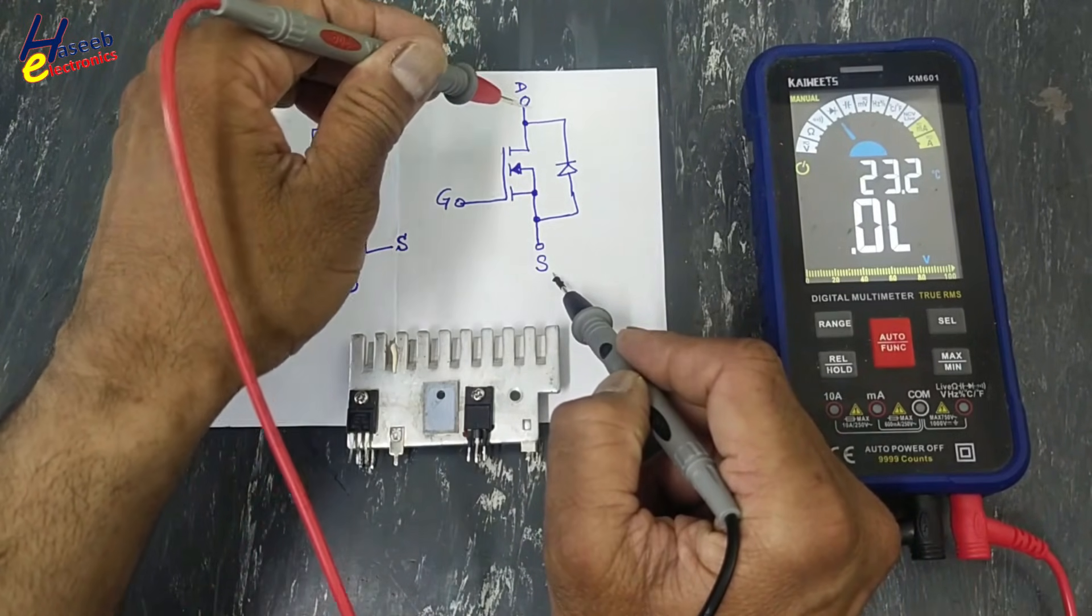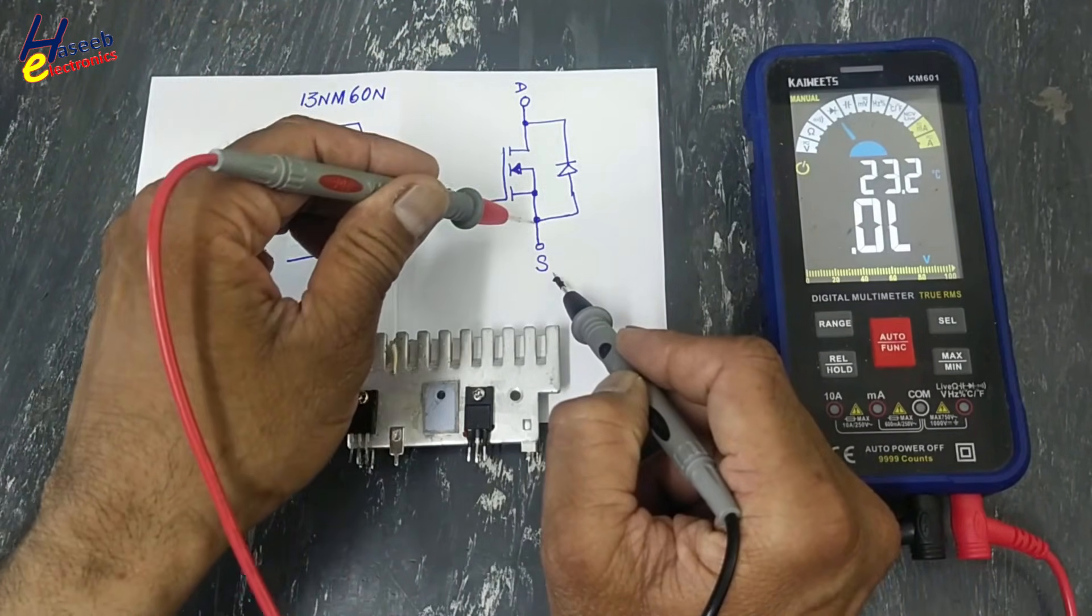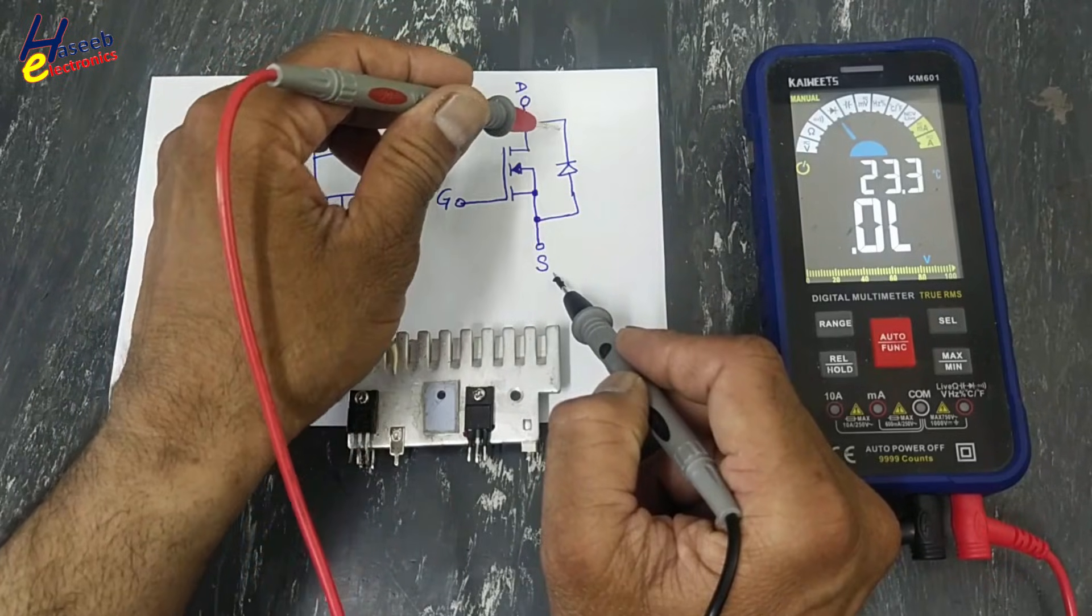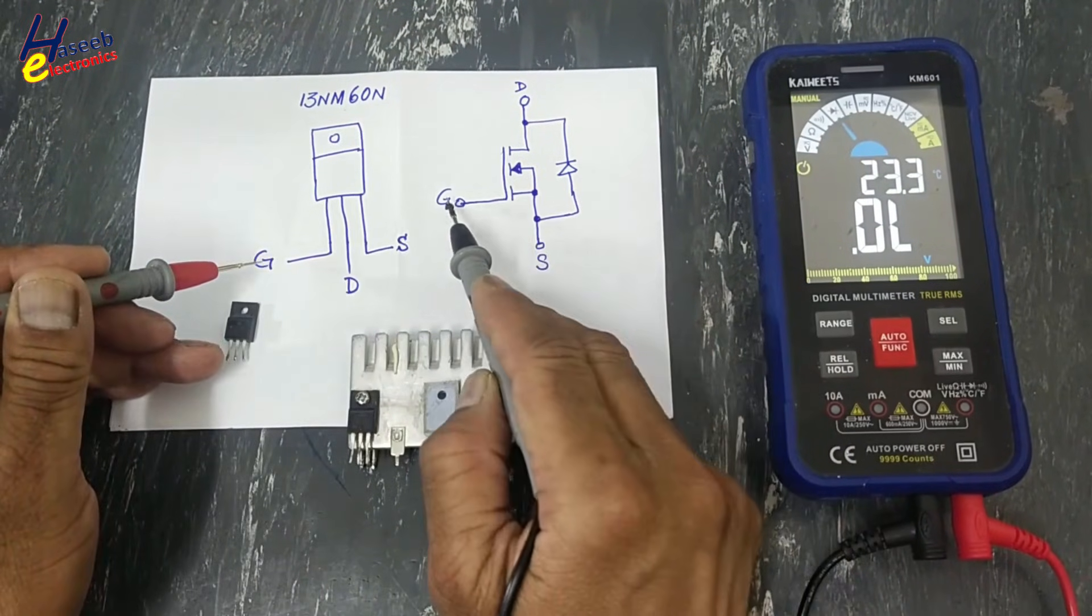Between source and drain there is a parasitic diode, body diode, or freewheeling diode. This is the channel and this is the gate.